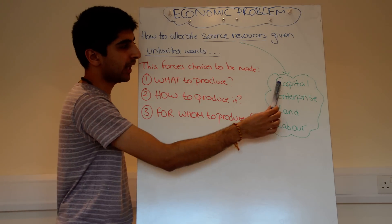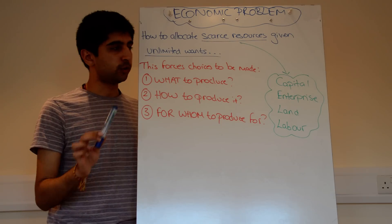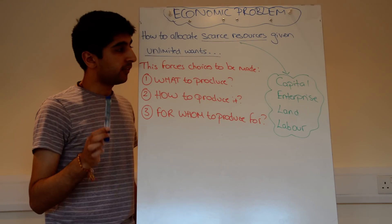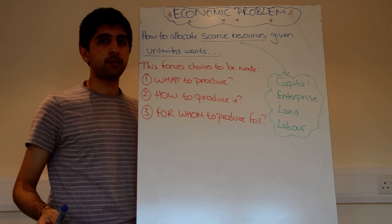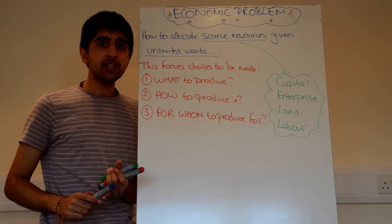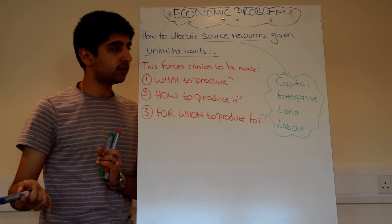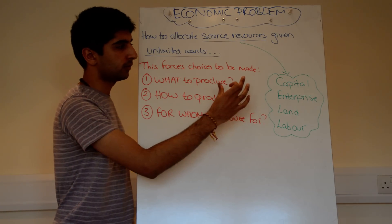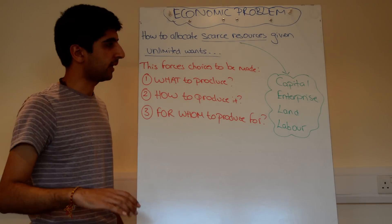I'm not going to dwell on any of those except for capital. Just know that capital is not money in economics — we do not use capital to mean money at all. Capital are goods made by man to produce other goods and services — man-made aids to production. The best examples are machines, capital machinery made by man to produce other goods and services, and things like tractors. These are good examples of capital goods. Don't ever confuse capital with money — not the case in economics.